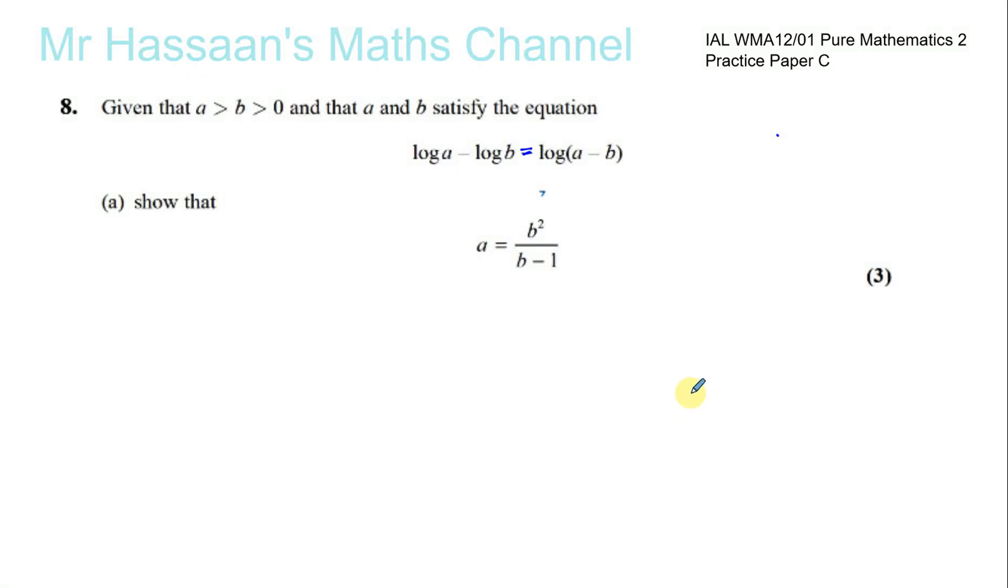Okay, question number 8 from practice paper C, Pure Maths 2, International A-Level. Given that A is greater than B, which is greater than 0, and that A and B satisfy this equation,